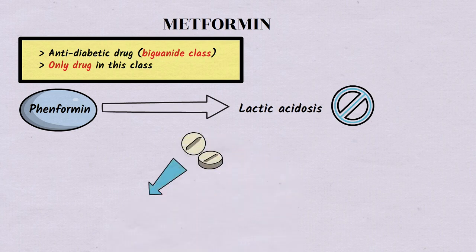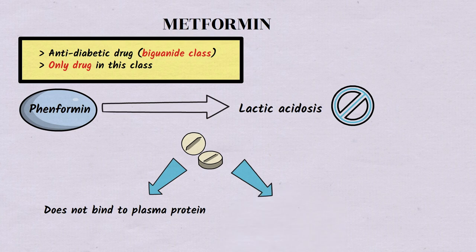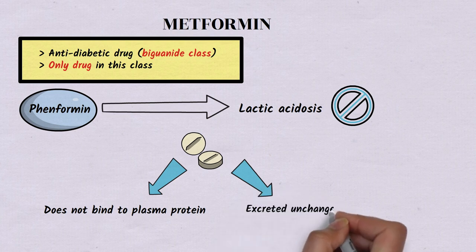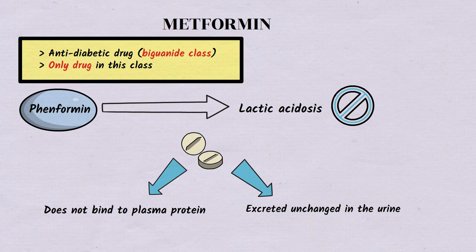Metformin does not bind to plasma proteins. It is excreted unchanged in the urine and hence is contraindicated in renal failure. We will discuss about that later in this video.